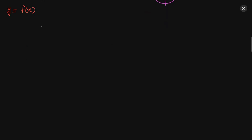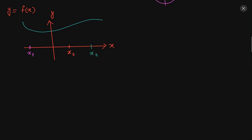Now we will show how to graphically represent y = f(x). We are not taking a particular function — just a random function. We have the x-axis and y-axis. We have a random graph here with three values on the x-axis: x1, x2, and x3.